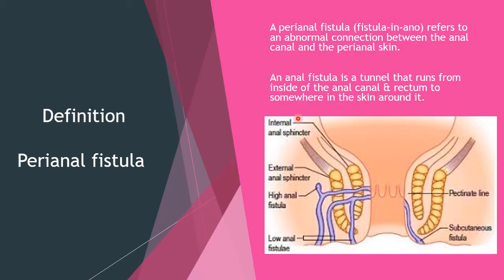What is the definition of perianal fistula? A perianal fistula, also known as fistula in ano, refers to an abnormal connection between the anal canal and the perianal skin. In short, it means it's an anal fistula — a tunnel that runs from the inside of the anal canal and rectum to somewhere in the skin around the anus. This diagram shows the anal canal and the abnormal passages that communicate between the anal canal and the perianal skin.